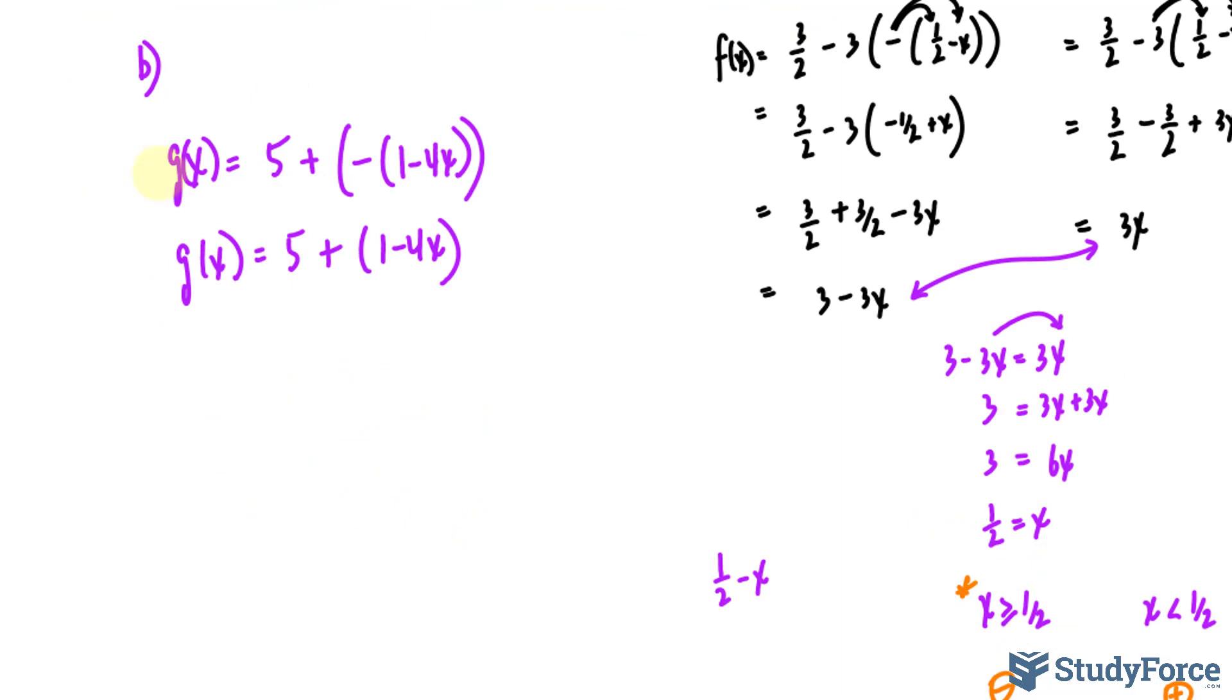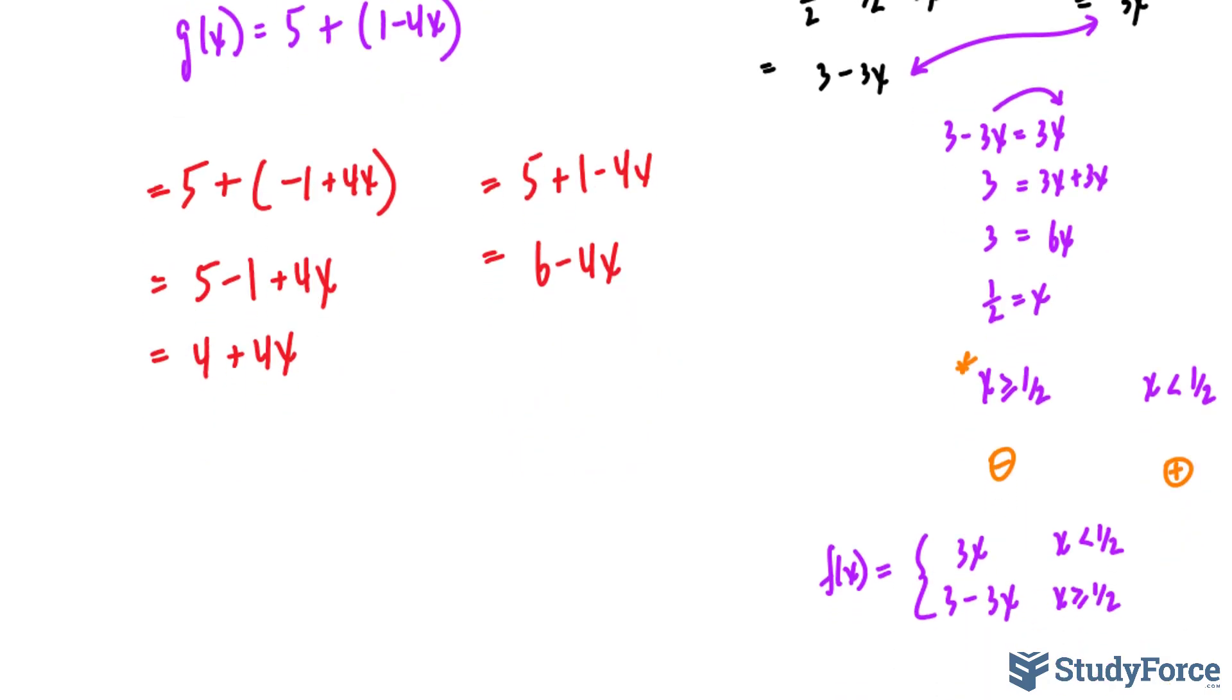Let's simplify both, starting with the first one. We have 5, and inside the parentheses here, negative 1 plus 4x. If we simplify further, we get 5 minus 1 plus 4x, and that leads to 4 plus 4x. That's for the first version. For the second version, we have 5 plus 1 minus 4x. That's 6 minus 4x, and that's the most it can go.